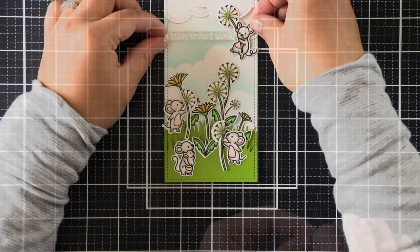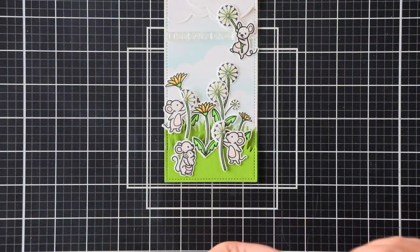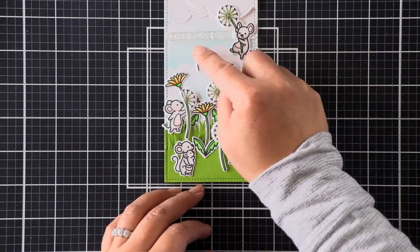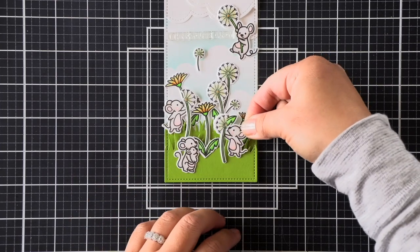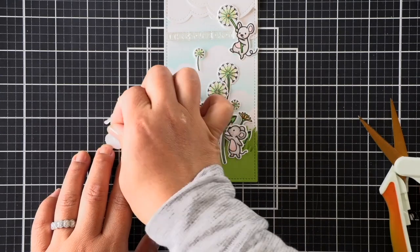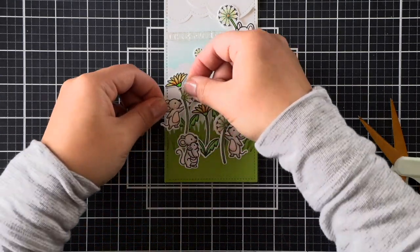I have a floating little dandelion here that I'm just going to stick right in the center of that open space, and then I'll adhere the rest of my mice. And then finally, that mouse that is floating at the top with the seed head.